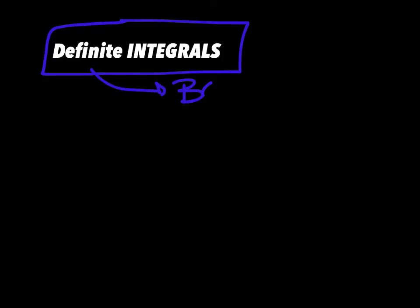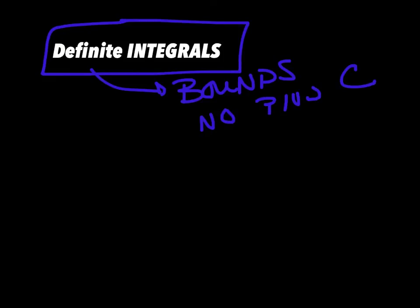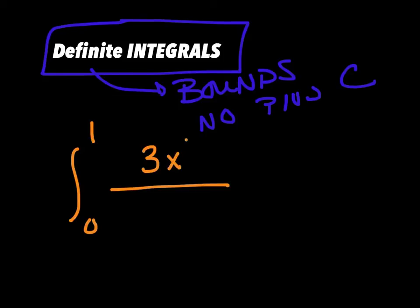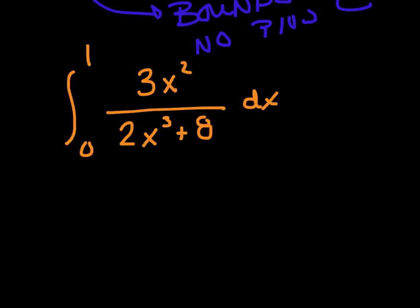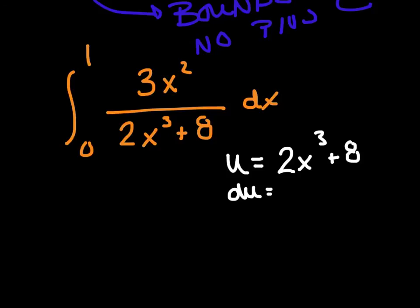Now let's talk about definite integrals — that means the integral has bounds, so there's no plus c and you should get an actual numerical answer. Example: the integral from 0 to 1 of 3x squared divided by (2x cubed + 8) dx. Pick the denominator: u equals 2x cubed + 8, so du equals 6x squared dx, meaning dx equals du over (6x squared).